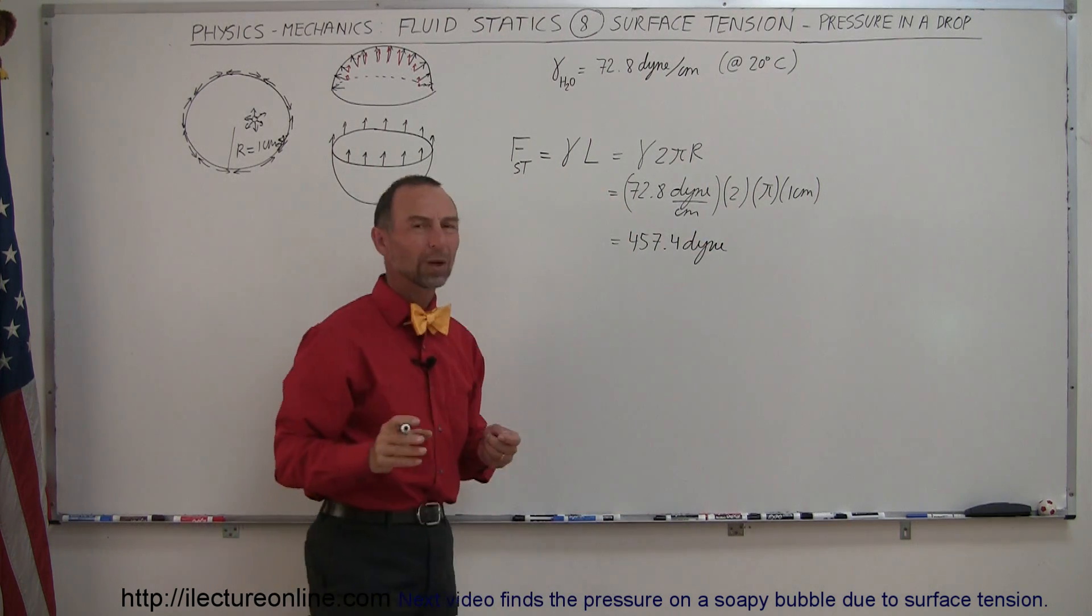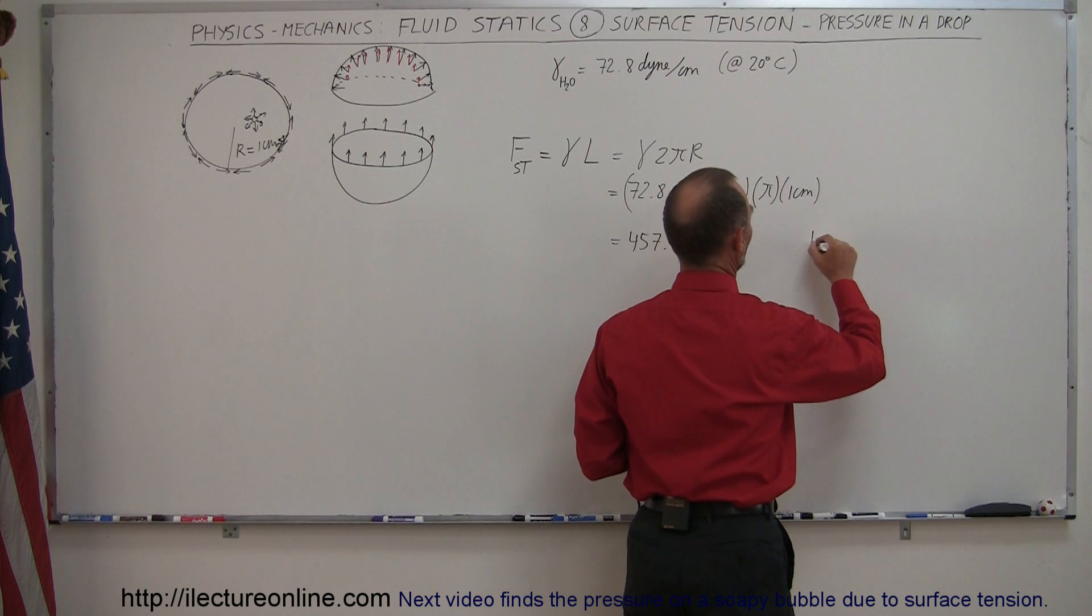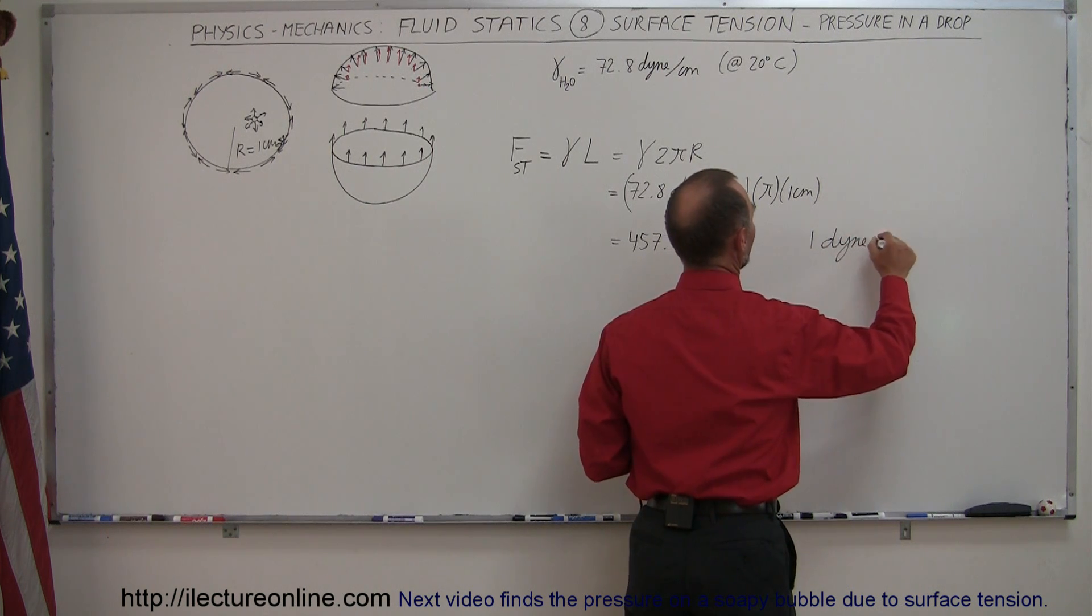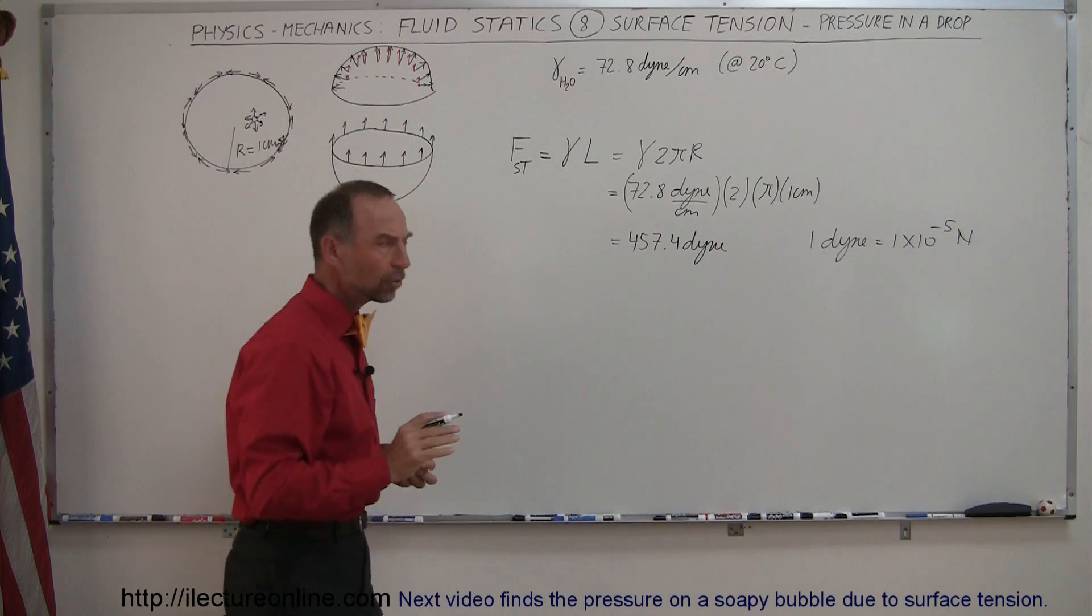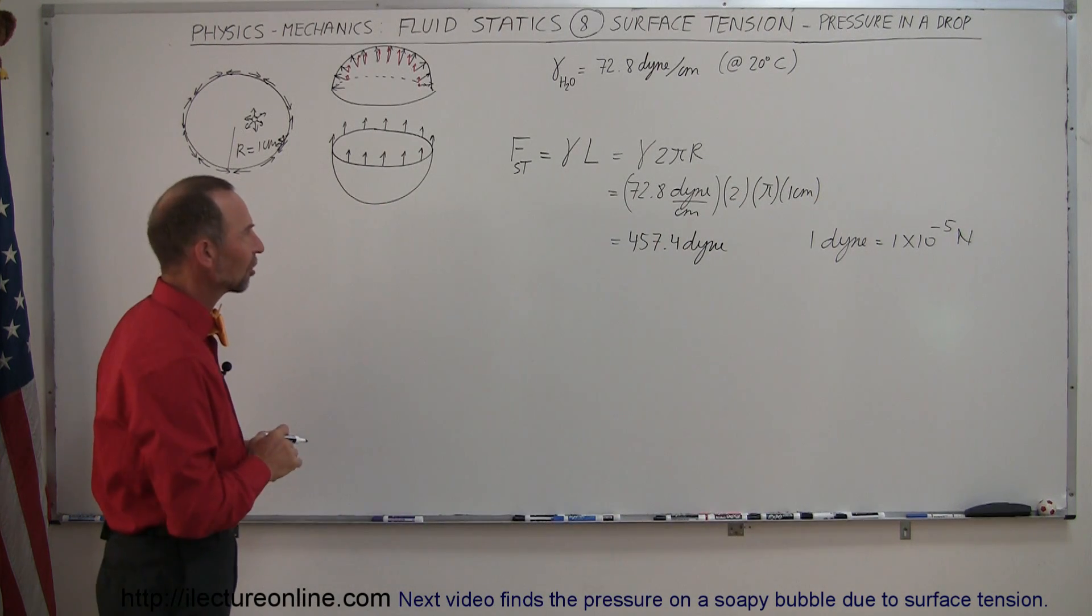457.4 dynes of force. Of course, the dyne is 1/100,000. So 1 dyne is equal to 1 × 10⁻⁵ newtons, just as a reference. So dynes is units of force in CGS units.